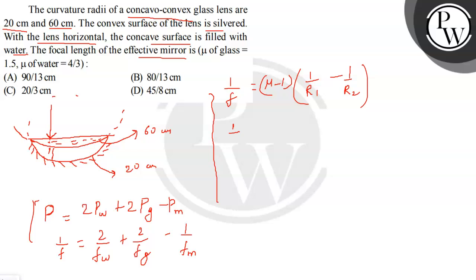So for water, one upon fw will be, it is entering from here and then here. So for water the refractive index is four by three minus one and one upon r1. So r1 will be what, this horizontal plane and its radius is infinity. So one upon infinity minus one upon minus 60, and this will come out to be one upon 180 and similarly we can do for the glass.